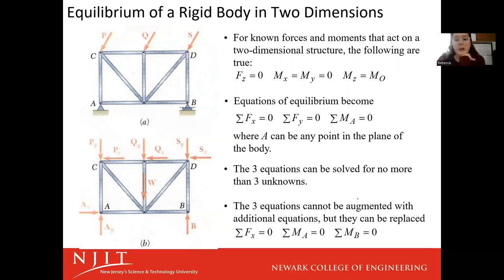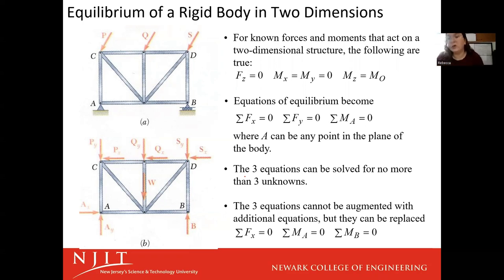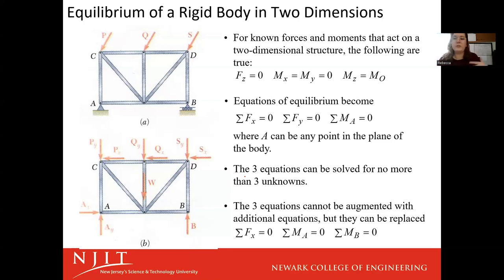When we're talking two dimensions, our equilibrium equations are the summation of forces in X and Y equals zero, and our summation of moments equals zero. When we're talking 3D, summation of forces in X, Y, and Z equals zero, and summation of moments in X, Y, and Z equals zero. We can only solve for as many unknowns as we have equations, so in 2D we have fewer equations, fewer variables to solve for. In 3D, you get those two extra equations.